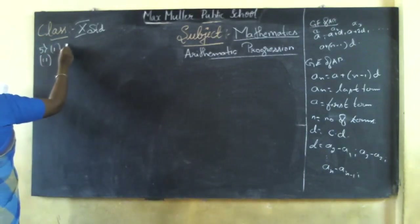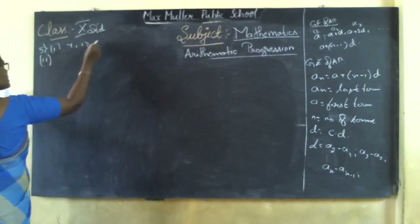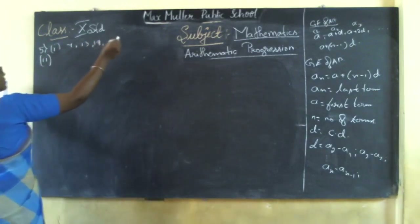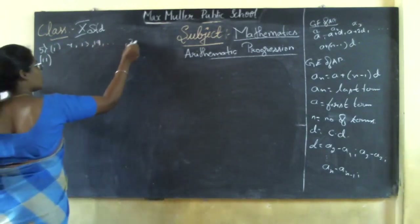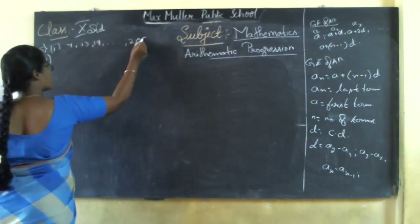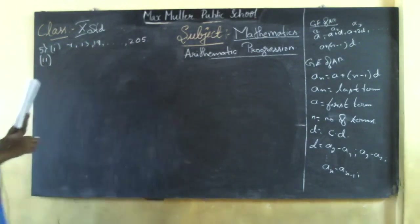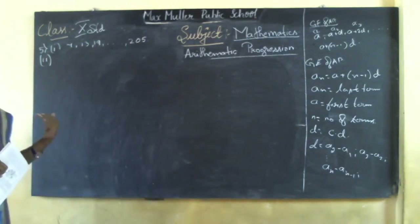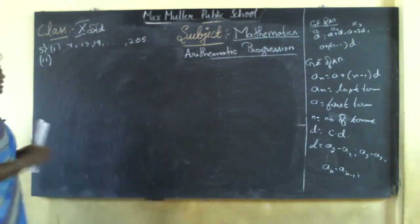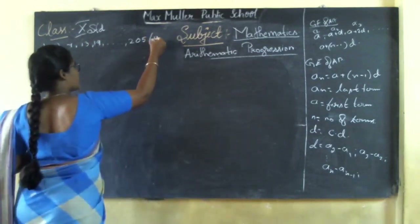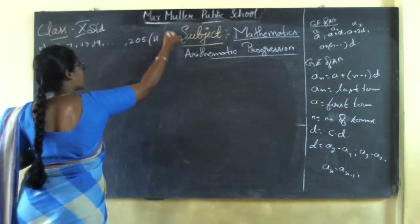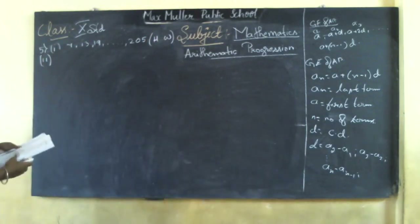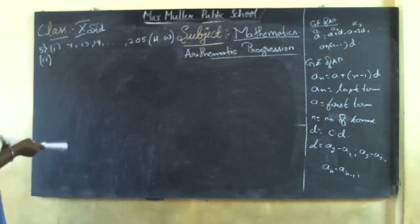The first sum is 7, 13, 19 — it goes on up to 205. Try the problems in your rough notebook. Whatever homework sums I give, try them in your rough notebook, then compare your answers with the PDF you get, and then write it in the homework book.